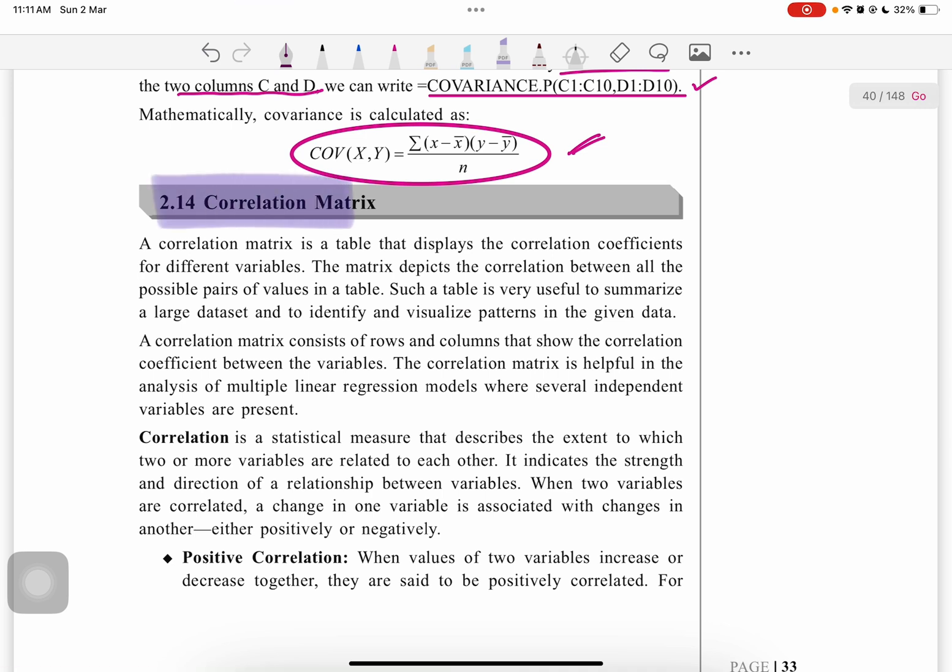Next is the correlation matrix, which is very important. A correlation matrix is a table that displays the correlation coefficients for different variables. You might be thinking, what's the difference between correlation and covariance?